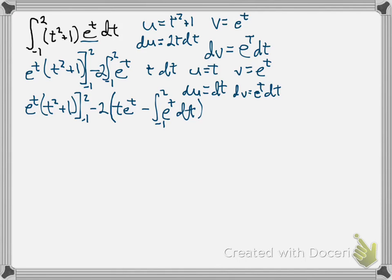And, finally, that's an easy anti-derivative. It's just e to the t. So, I have e to the t times t squared plus 1, and I'm going to do that part from negative 1 to 2, and you can do them separately, or you can do them all together.